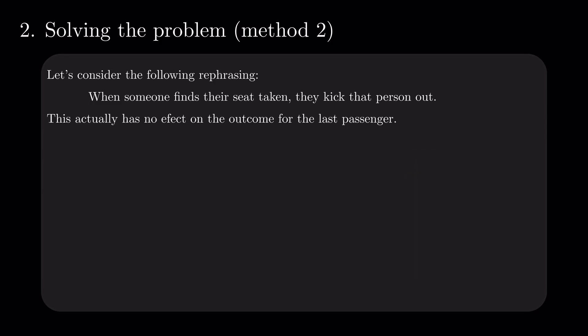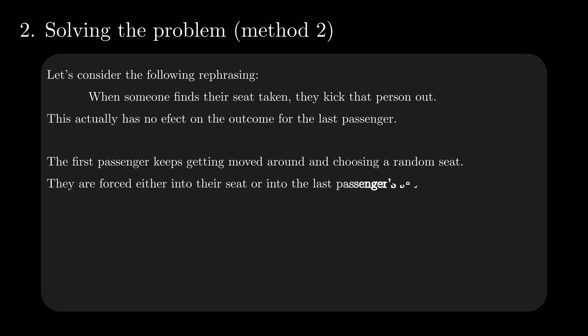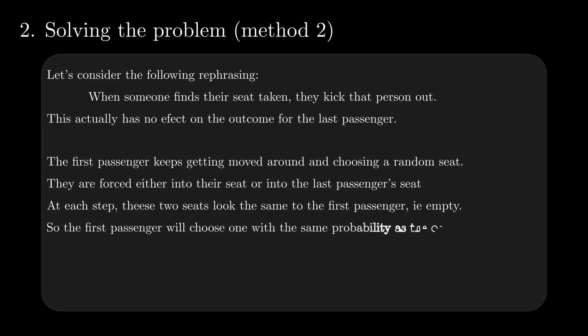In this rephrasing, the first passenger keeps getting moved around and having to choose a new random seat. By the time everyone else has boarded, they have been forced by elimination either into their correct seat or into the last passenger's seat. At each step, the crucial two seats look the same to the first passenger, i.e., empty. So we are certain that the first passenger will choose one with the same probability as the other. Hence, the last passenger will get in his seat with 50% chance.